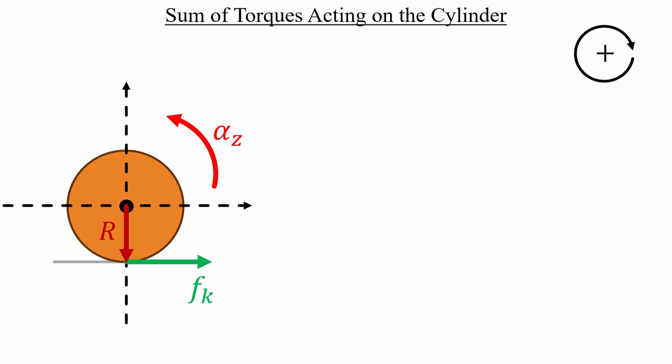This sum is just a single torque. And since it's acting opposite to the initial positive rotation, we include a negative sign. Let's cancel out a factor of r, and then plug in our previous definition for the kinetic friction.